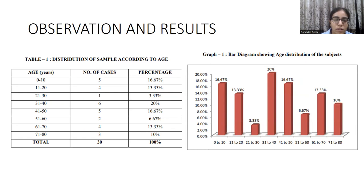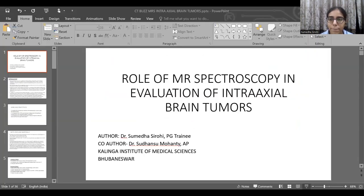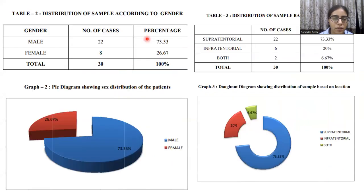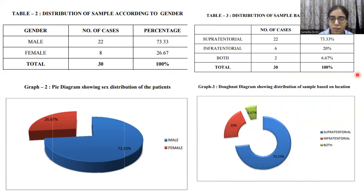Observations and results. Table 1 shows distribution of the sample according to age — approximately 16%, or the majority of patients, lie in the 41 to 50 years age group. Table 2 shows distribution according to gender — 70% of the population was male, while the remaining were female. Regarding distribution based on location, approximately 70% of the population had supratentorial tumors, 20% had infratentorial tumors, and 6% had both supra- and infratentorial involvement.